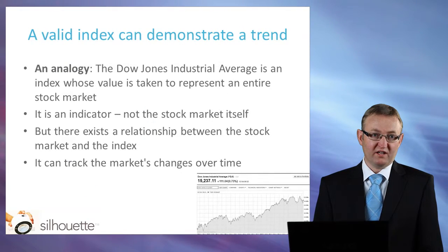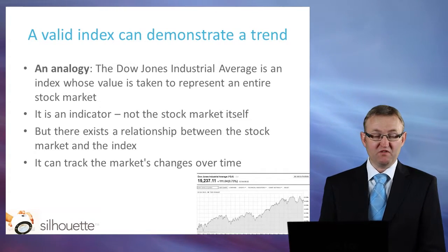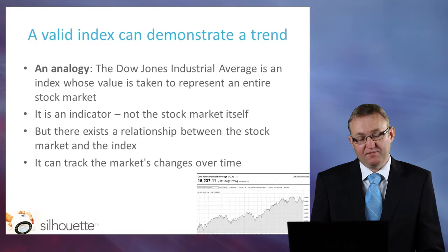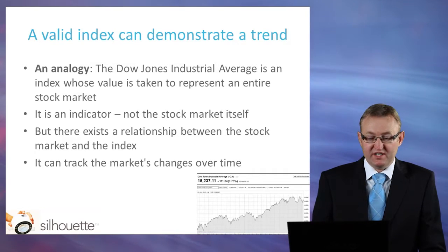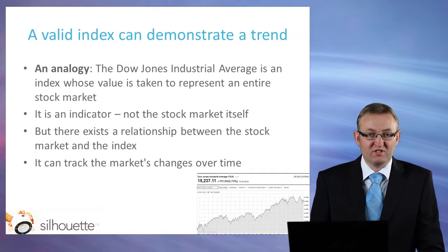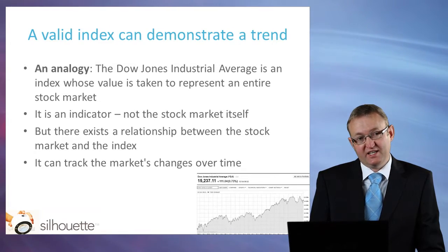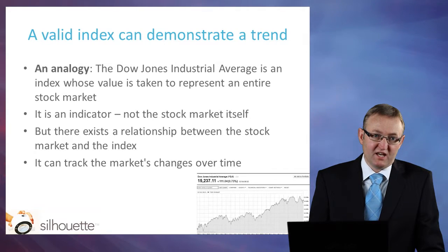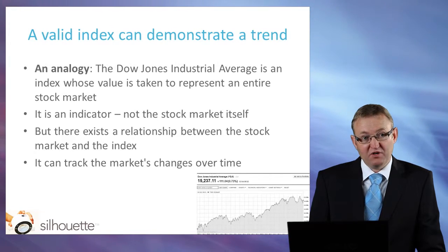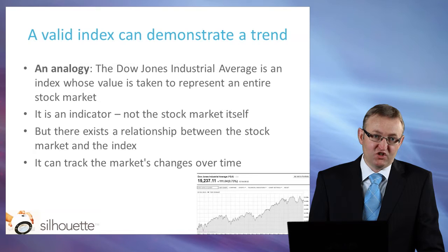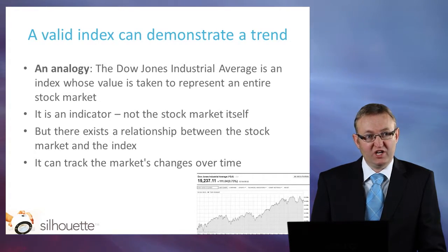I want to give an analogy of what an index is all about, because it would be very useful if the area index could be used as an indicator of wound healing. The Dow Jones Industrial Average is an index whose value is taken to represent an entire stock market. The Dow Jones is not the stock market, but it's an indicator. And it can be used as an indicator because there is a relationship between the stock market and the index. Because of that, the Dow Jones Index, because it's easily calculated, is a very useful tool for tracking changes over time.